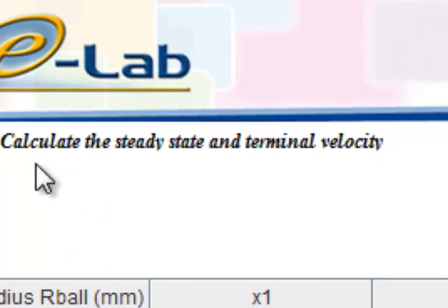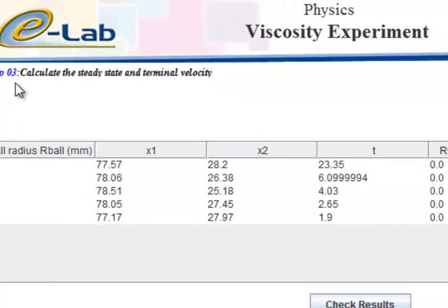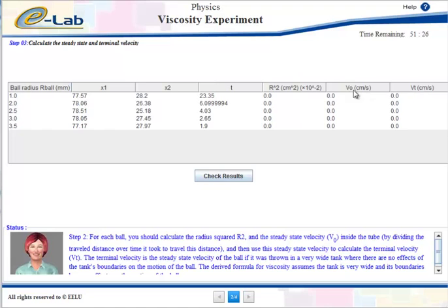Step 2: Calculating the steady state and terminal velocity. At the end of this step, you will be able to calculate the steady state and terminal velocity of the ball in the fluid. Now let's start step 2 of the experiment.